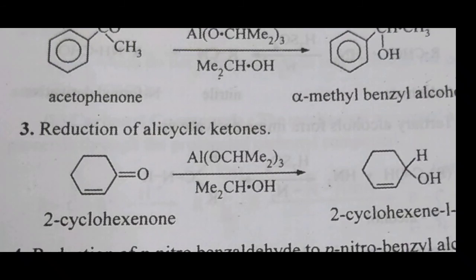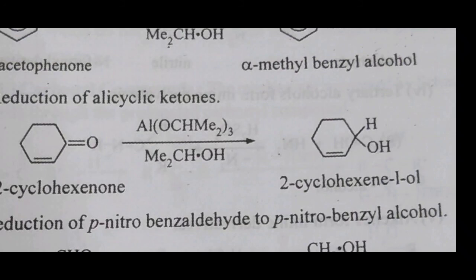The third application is reduction of alicyclic ketones. For example, 2-cyclohexanone in the presence of aluminum isopropoxide — the C=O group is converted to CH–OH. The product is 2-cyclohexen-1-ol, where the cyclohexane ring contains one double bond. The OH group is attached at carbon number 1 and the double bond is present at carbon number 2.